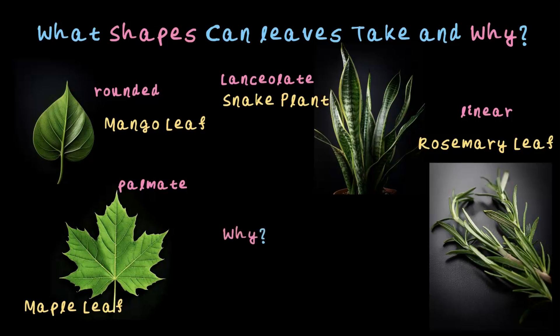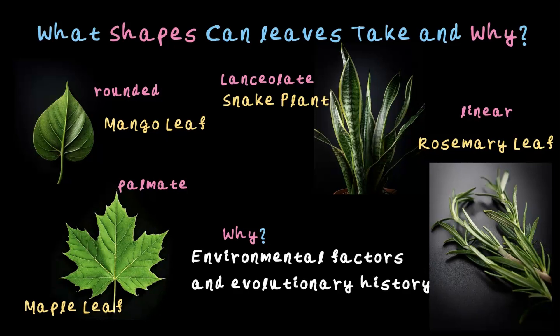But why do leaves take different shapes? Why not just stick to one? Well, it likely comes down to environmental factors and evolutionary history. Environmental factors like sunlight, water, and nutrient availability. Different shapes have adapted to different conditions over time. These are some of the shapes leaves can take and the reasons behind their variety. Isn't it really fascinating how nature works?